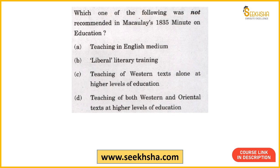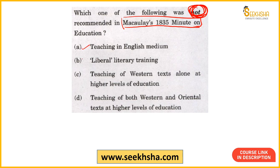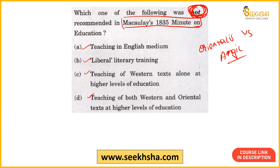Next question: Which among the following was NOT recommended in Macaulay's 1835 Minute on Education? Options are: A — Teaching in English medium; B — Liberal literary training; C — Teaching of Western texts alone at higher level of education; D — Teaching of both Western and Oriental texts at higher level of education. In UPSC, always circle the word 'not.' If you know about Macaulay and the Orientalists vs Anglicists debate from NCERT, you can answer this. The right answer is Option D.